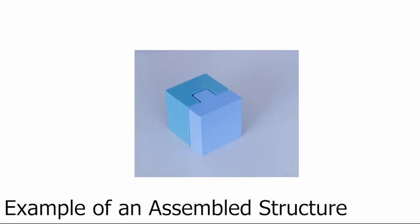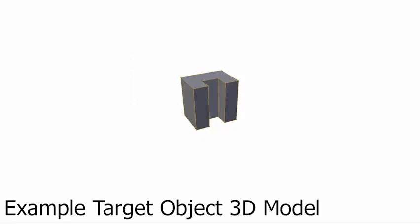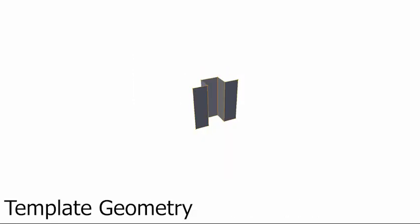We always start with an example of an assembled structure. By removing the manipulation object, we attain an example target object from which a 3D model is created. The template geometry is extracted from the model by removing parts that were not in contact with the manipulation object.